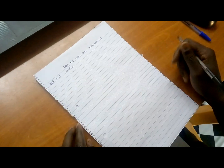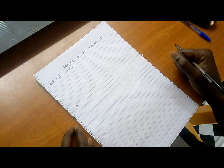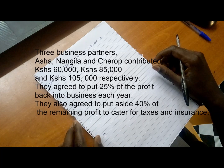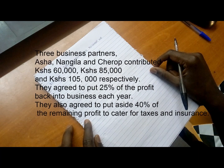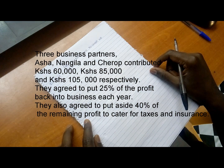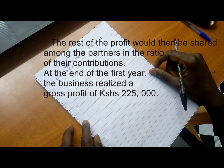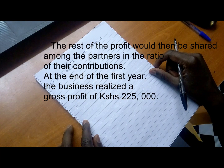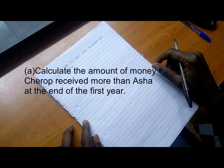Hello class, today we are going to solve a question that has been bringing a lot of difficulties. Three business partners — Asha, Nangila, and Cherope — contributed 60,000 shillings, 85,000 shillings, and 105,000 shillings respectively. They agreed to put 25% of the profit back into business each year, and 40% of the remaining profit aside for taxes and insurance. The rest is shared in the ratio of their contributions. At the end of the first year, the business realized a gross profit of 225,000 Kenyan shillings. Calculate the amount of money Cherope received more than Asha at the end of the first year.